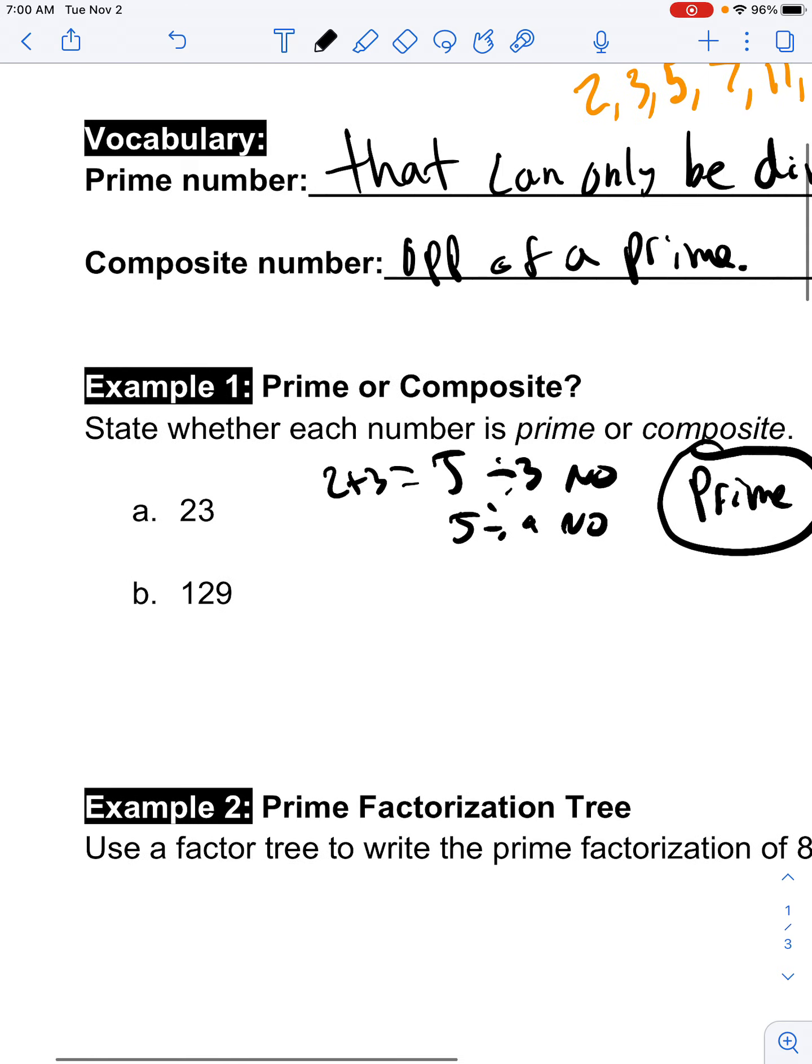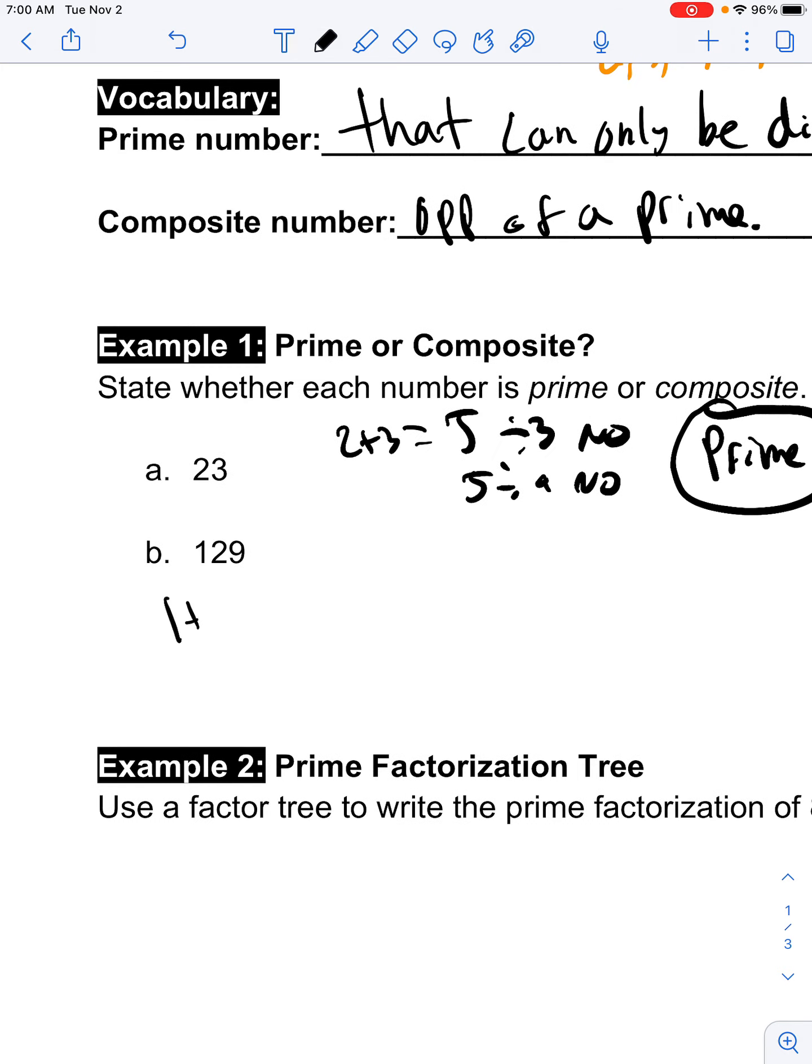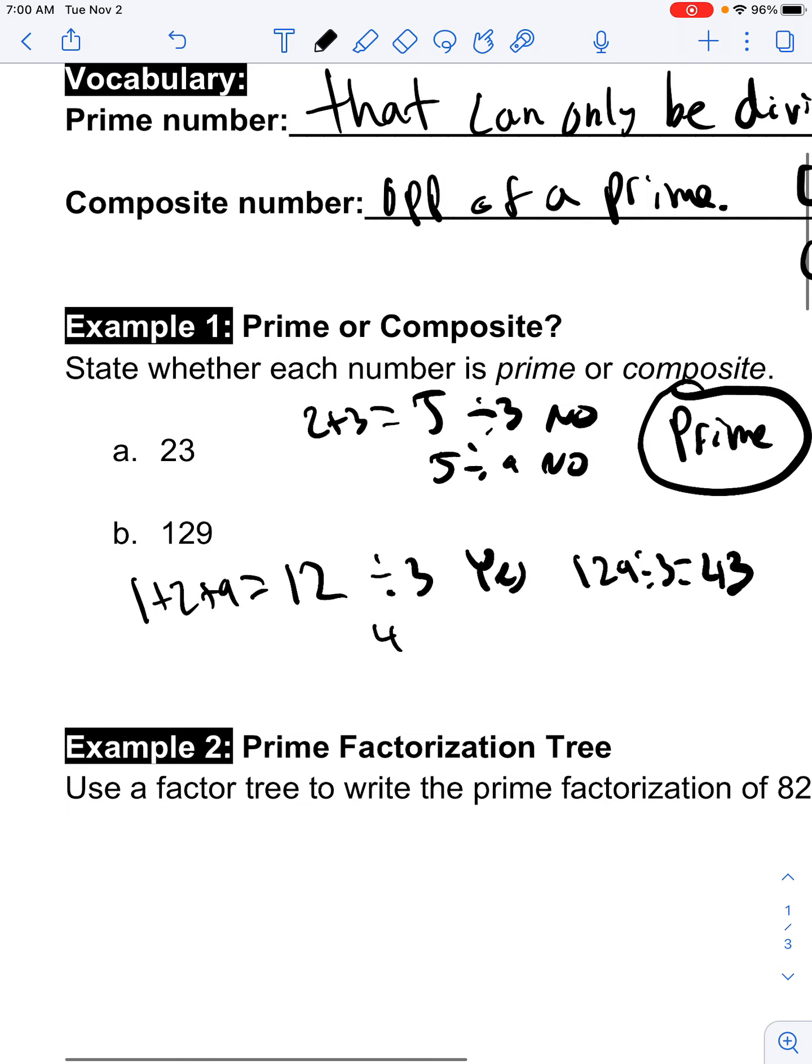But when I look at 129, I'm thinking, that's a big number. Again, what I'm going to do is add up the digits, 1 plus 2 plus 9, and I'm going to get 12. Well, 12 actually can be divided by 3. 12 divided by 3 equals 4. But when I do 129 divided by 3, I get 43. So, because I can divide it by a number other than itself or 1, I'm going to label this number a composite number.